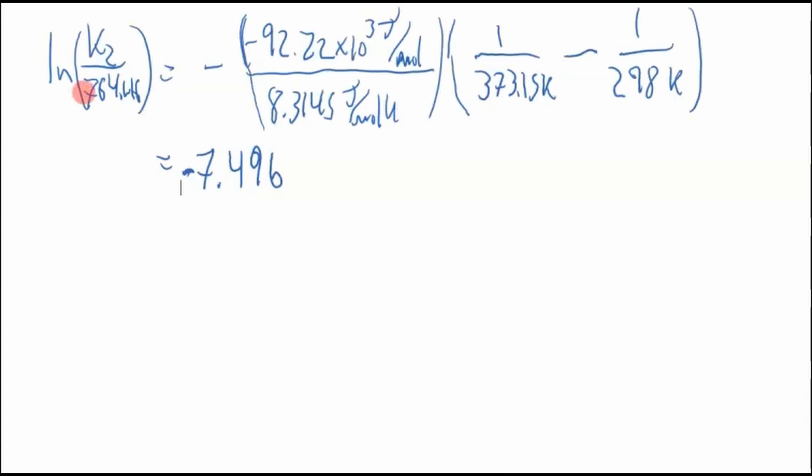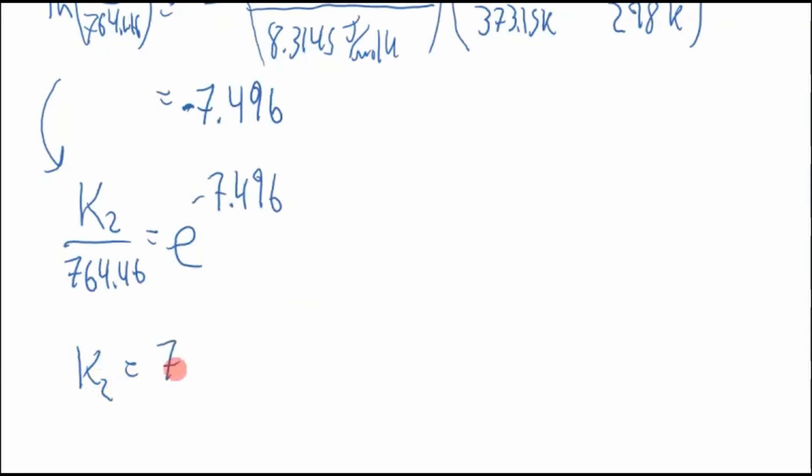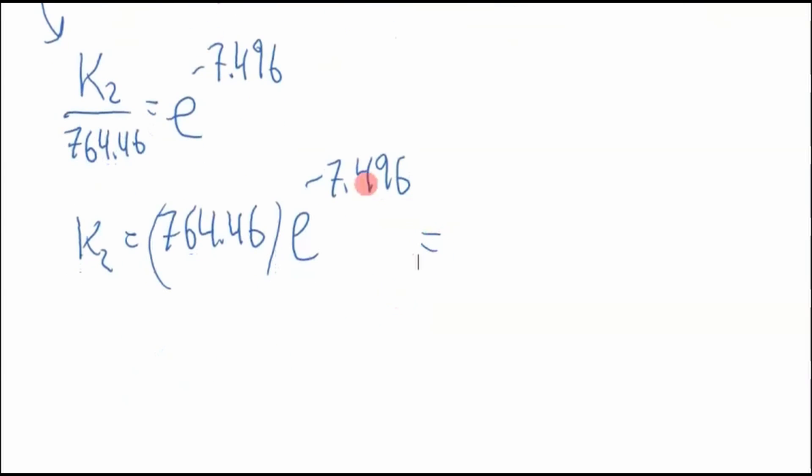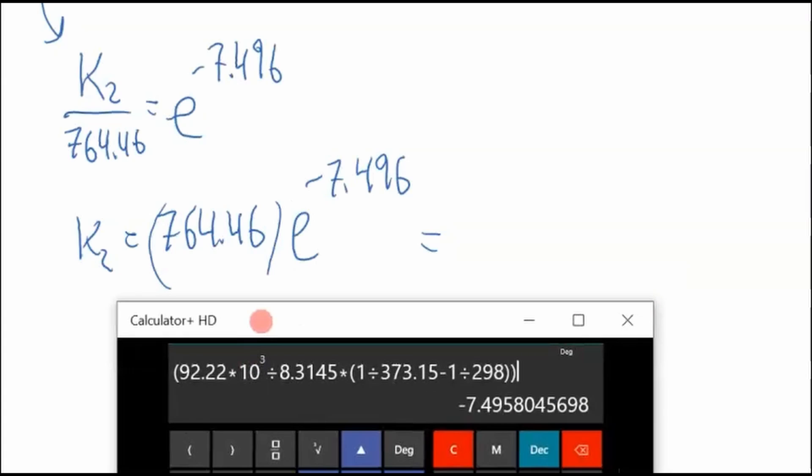Okay, so this is logarithmic form. We're going to convert it to exponential form. This is ln K2 over K1, so K2 over our number, 764.46, equals e to the power of negative 7.496. So K2 equals 764.46 times e to the power of negative 7.496. It's going to be a small number, I believe, because this is a negative exponent. All righty, so now this is the whole number. Oh, no, I'm going to delete this. I just don't want to mess things up.